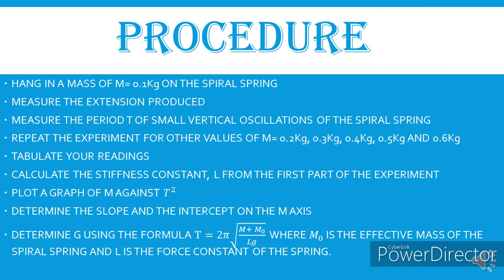Now the need for me to get the extension is because I need to calculate the stiffness constant of that particular spiral spring, because it will be needed in deducing the acceleration due to gravity. So once I've done that, I'll measure the period T of small vertical oscillations of the spiral spring, and I'll have to measure and repeat that for different sets of masses: 0.1, 0.2, 0.3, 0.4, 0.5, and 0.6 kg.